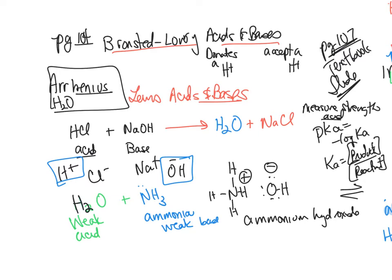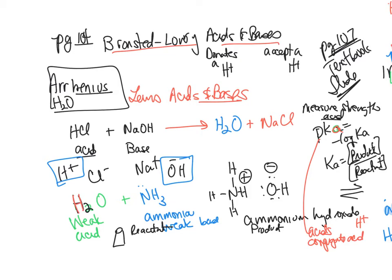Where did the H go in H₂O + NH₃? It went to ammonia, making ammonium (NH₄⁺), which has a pKa of 9. The equilibrium always lies on the side of the reaction with the weakest acid — the highest pKa value. The higher the pKa, the weaker the acid. So the equilibrium here favors the reactant side.